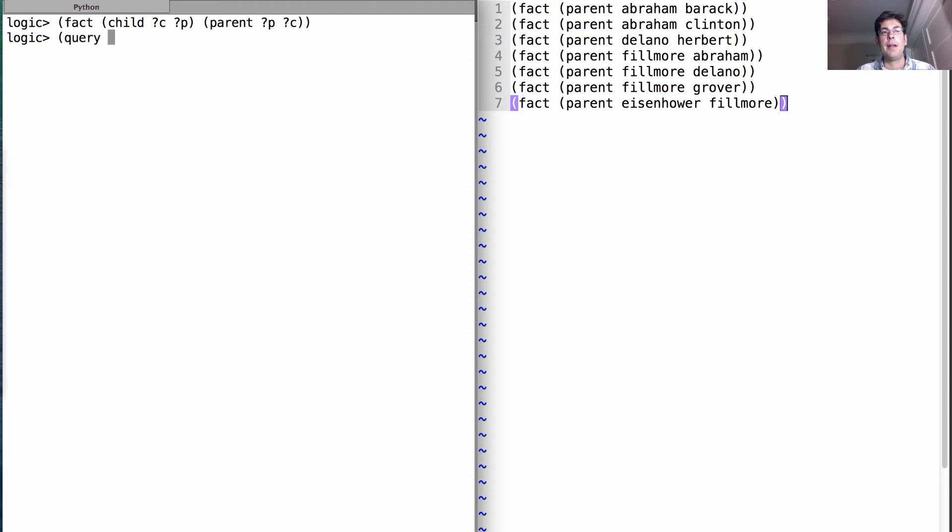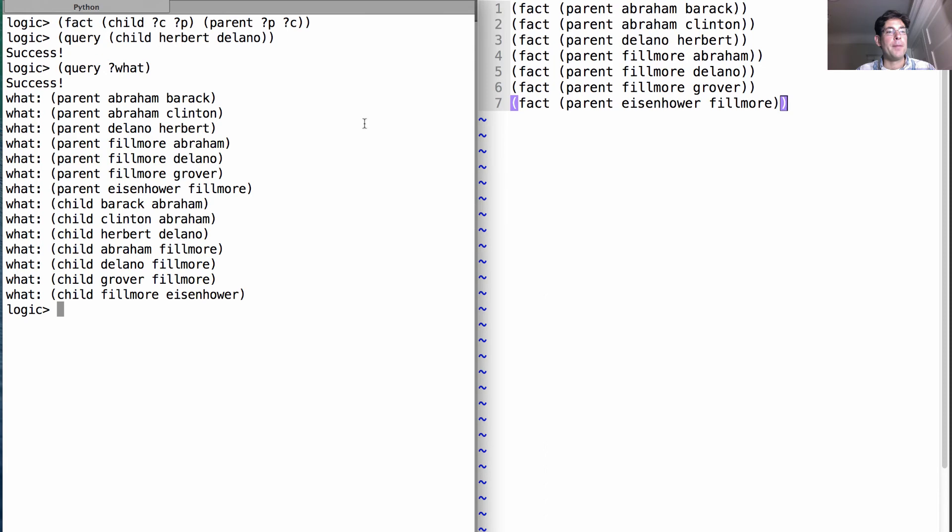We can now issue queries. The query that I issued before was, is it the case that Herbert is in a child relationship with Delano? And the logic language says, yes. I could even ask, what's everything that I know? And it will tell me all the parent relations that I've stated in my file, as well as all of the child relations that could possibly be derived from this set of parents, using this one compound fact. We get a very productive amount of information about whatever domain we're describing with our facts, just by using a compound fact that tells us how relations are related to each other.